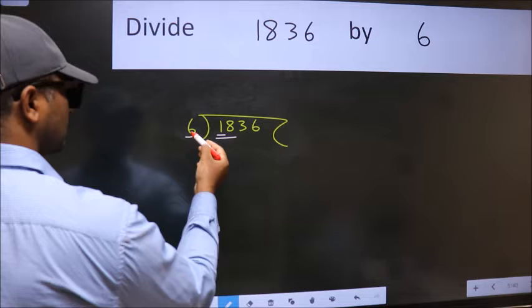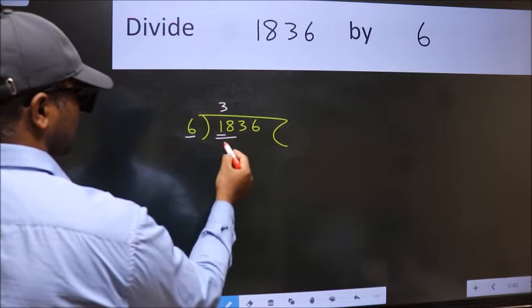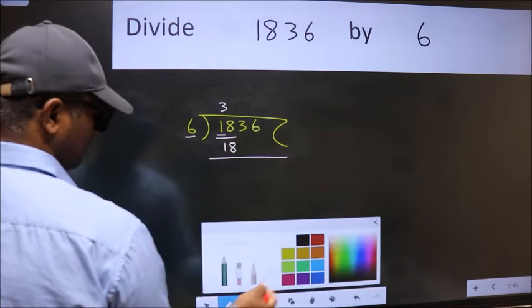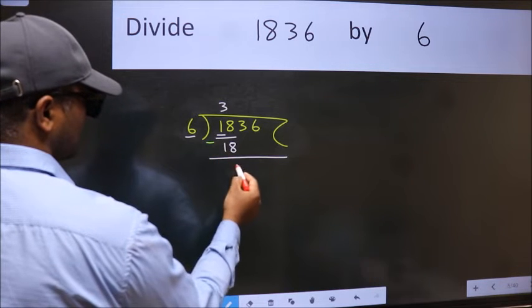When do we get 18 in the 6 table? 6 times 3 is 18. Now we should subtract. We get 0.